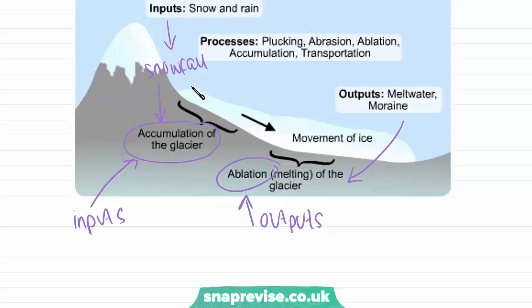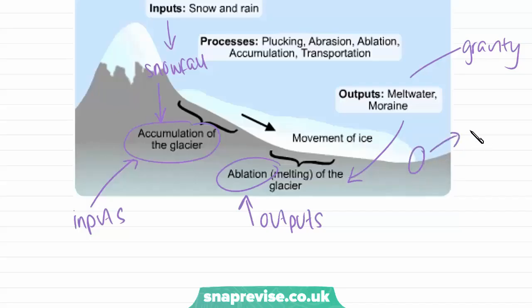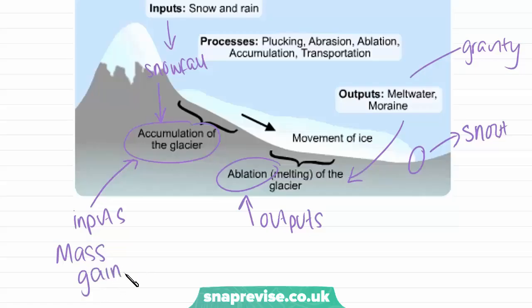Through this system, our inputs are transferred down the valley under the influence of gravity, which is pulling it down the slope. And when they reach the end of the glacier, also known as the snout of the glacier, they become our outputs. So the inputs is the mass gained by the glacier, and our outputs, also known as ablation, is the mass that is lost.